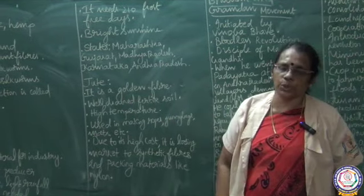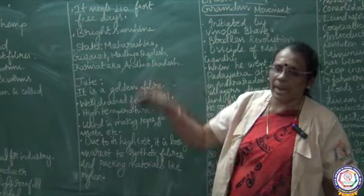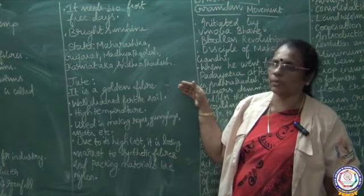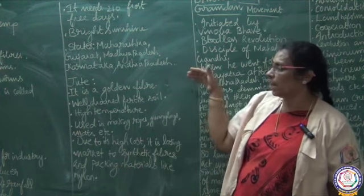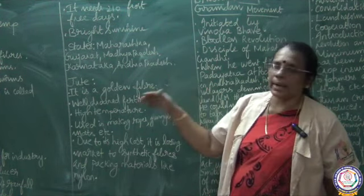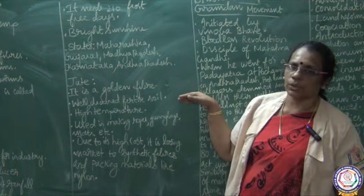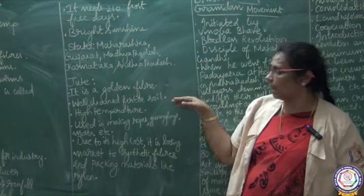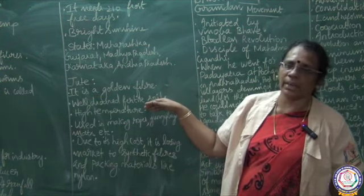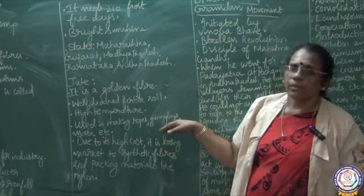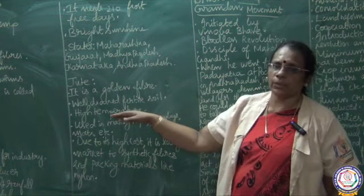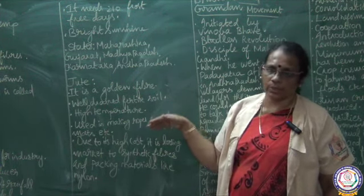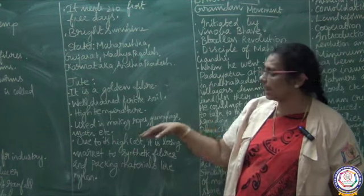The next fiber crop is jute, which is also a plant fiber. Jute is called the golden fiber because it is very costly. It requires well-drained fertile soil and high temperature for cultivation. Jute is used for making ropes, mats, gunny bags, etc.